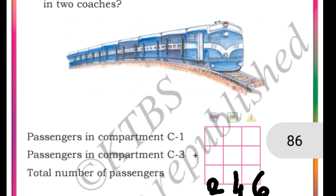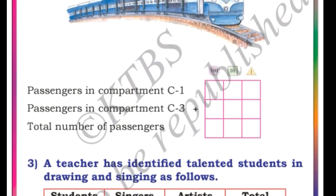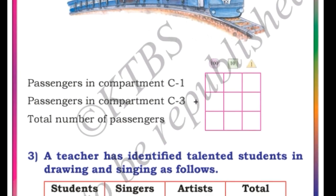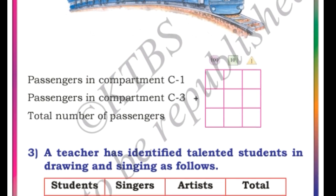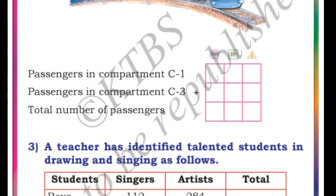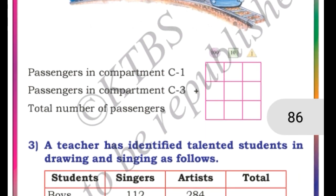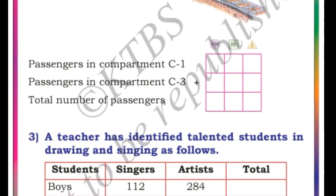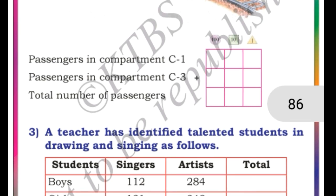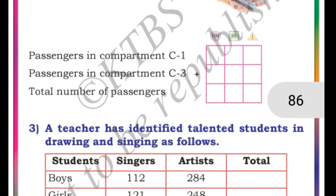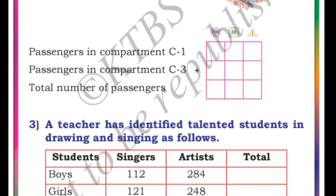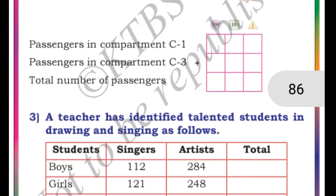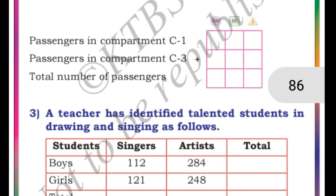Next question: a teacher has identified talented students in drawing and singing. We need to total them. For boys: singers 112, artists 284 — adding 112 and 284, the answer is 396. Total boys is 396. Now for girls: 121 plus 248, the answer is 369.